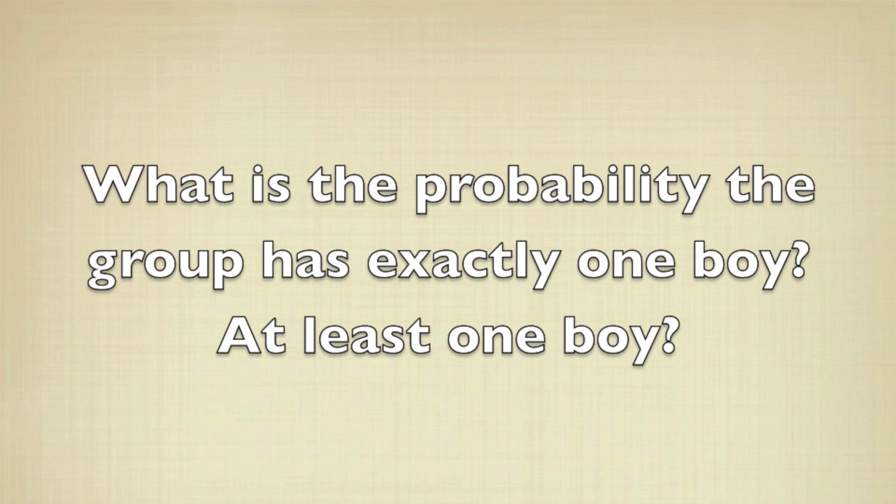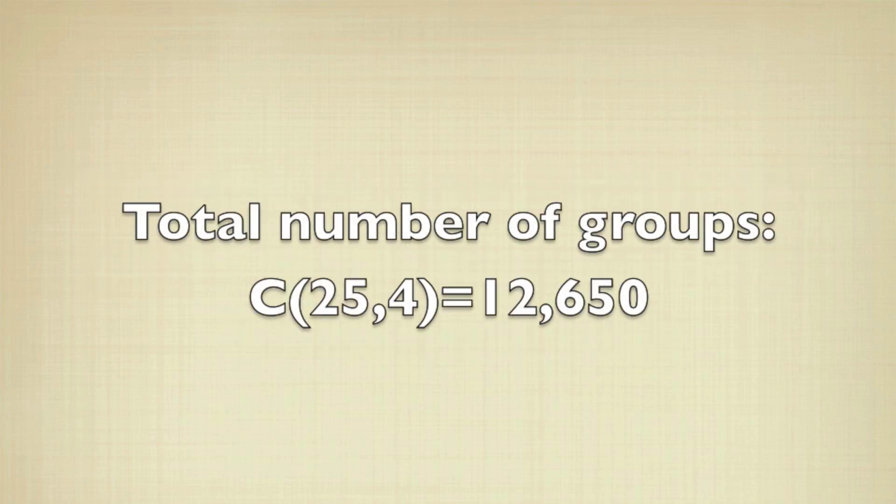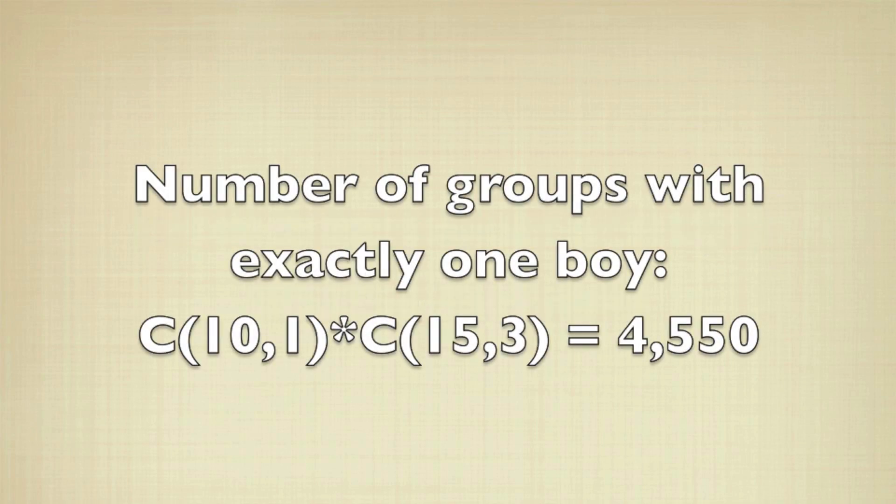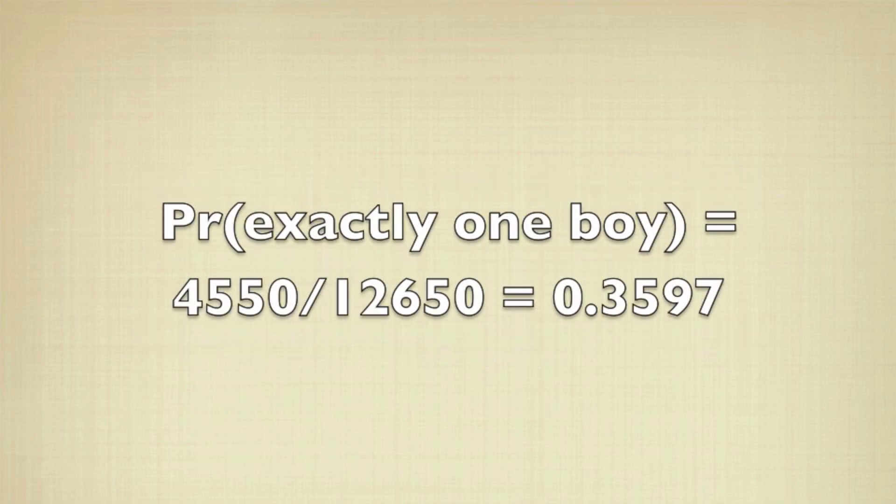We'll approach these the same way as we did before. We need to find the total number of groups possible, that's C(25,4). We also need to find out how many groups have exactly one boy for the first question. To calculate that, we choose the one boy, C(10,1), and we choose the three girls, C(15,3). So the probability is just going to be the quotient of these two numbers, or about 36%.